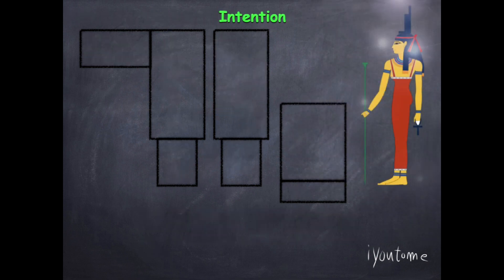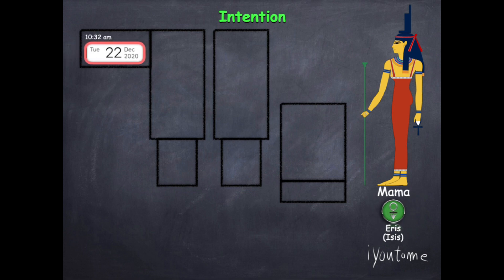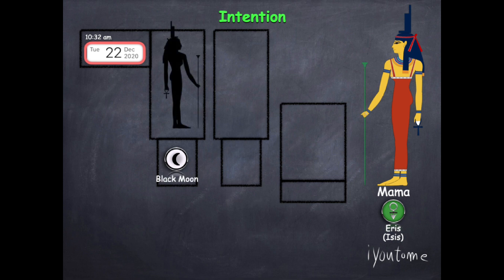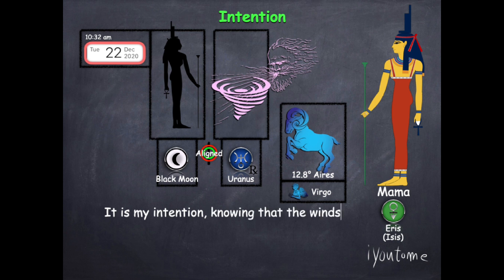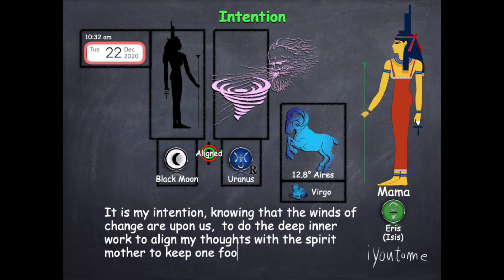The second alignment happens on December 22nd, 10:32 AM Eastern Standard Time. This alignment is between the black moon, the mother of all mothers node, which aligns with Uranus winds of change in Aries the head in the sub harmonic of Virgo mama's domain. This is my intention: It is my intention knowing that the winds of change are upon us to do the deep inner work to align my thoughts with the spirit mother to keep one foot in the etheric waters with respect to being pure.